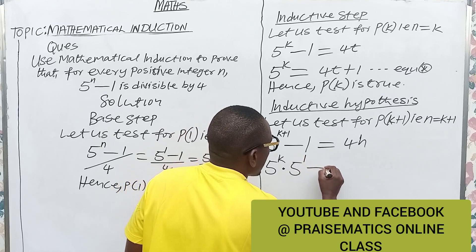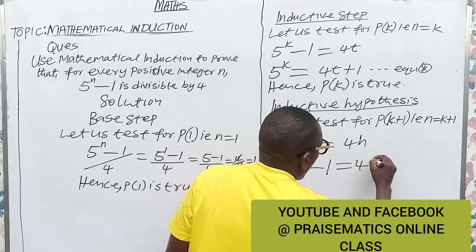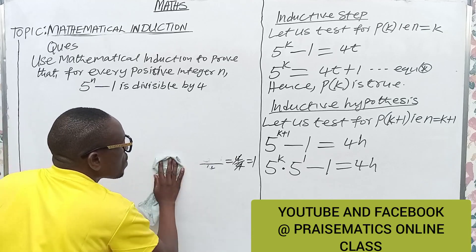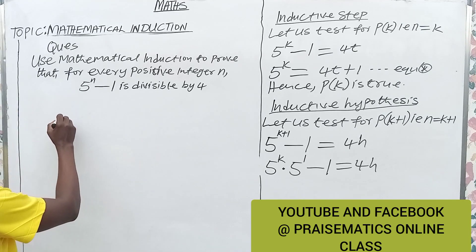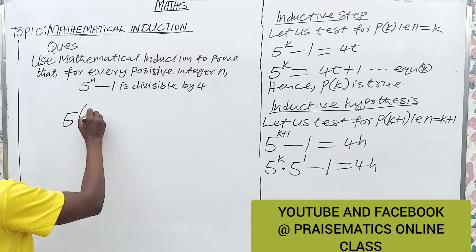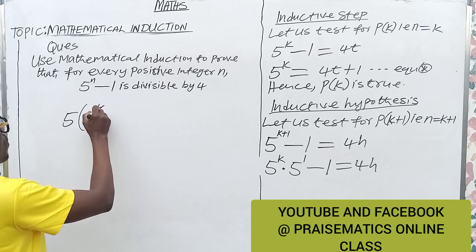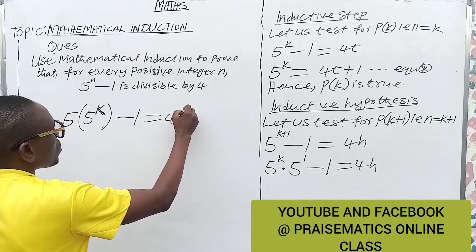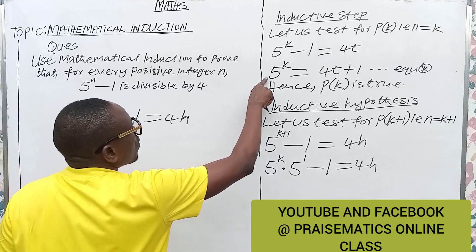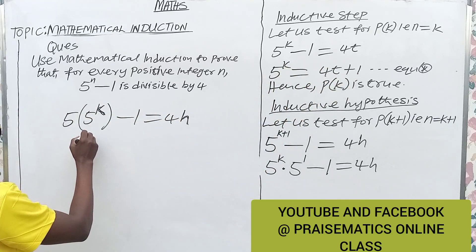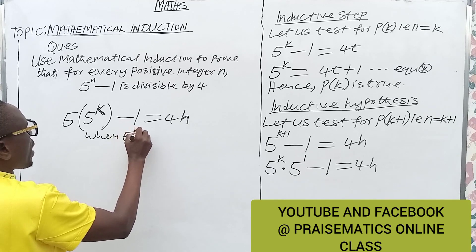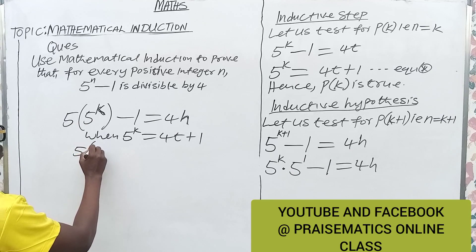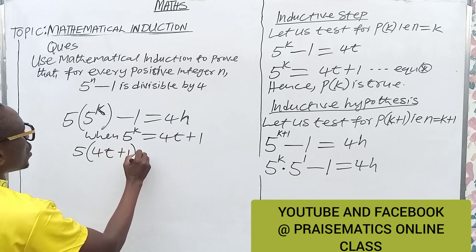Is 5 raised to the power of k plus 1, minus 1, divisible by 4? We can rewrite this as 5 into 5 raised to the power of k, close bracket, minus 1. From equation 1 we have 5^k equal to 4t plus 1. We substitute it here, so we now have 5 into bracket 4t plus 1, close bracket, minus 1.